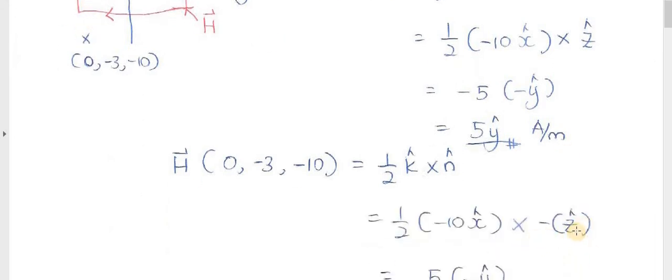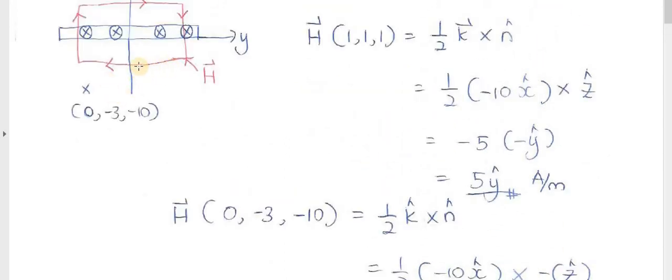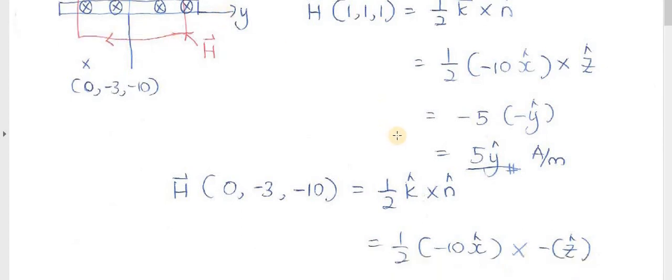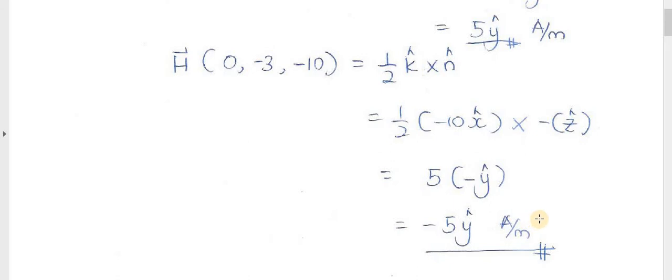So it will be negative z-direction. So as a result, you will get negative y. So you see this red line is pointing in the negative y direction. So this one will be the direction of your magnetic field.